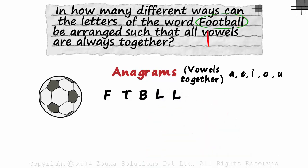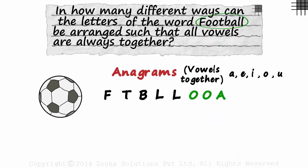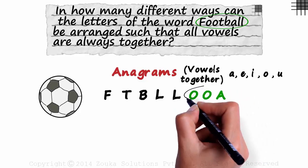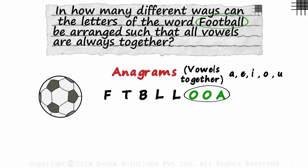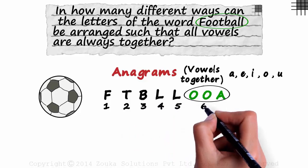The vowels we have missed are O, O and A. So we write the vowels together here. As the vowels always have to be together, we consider them as one element. So after this assumption, how many elements do we have in all? One, two, three, four, five and six. Six elements.